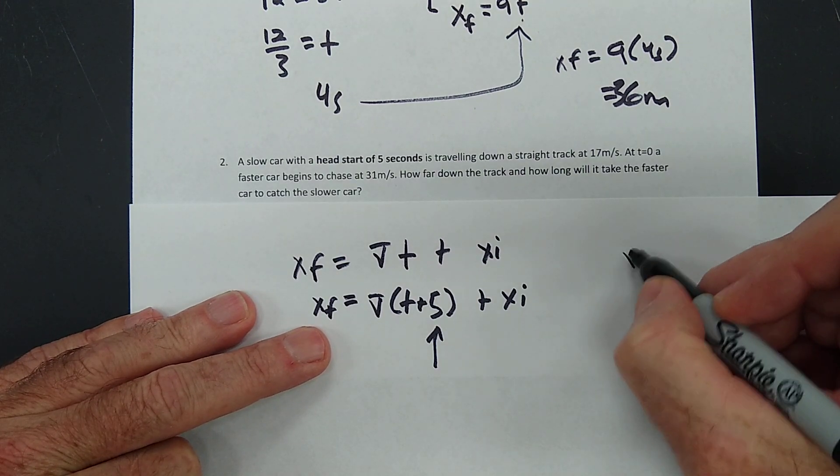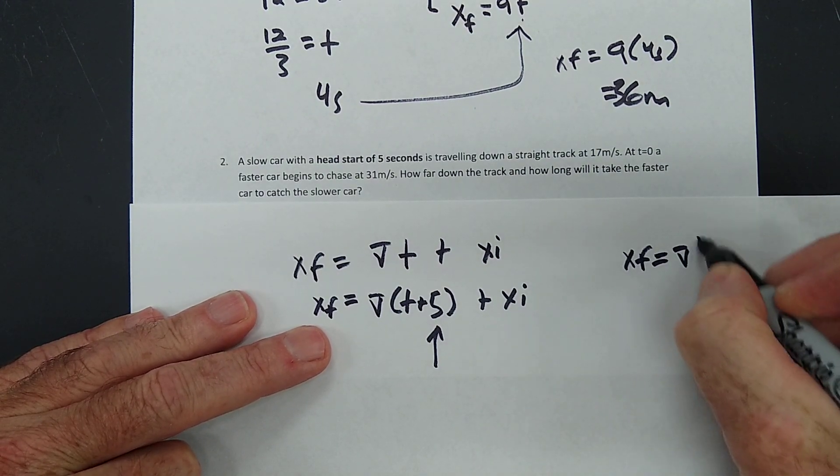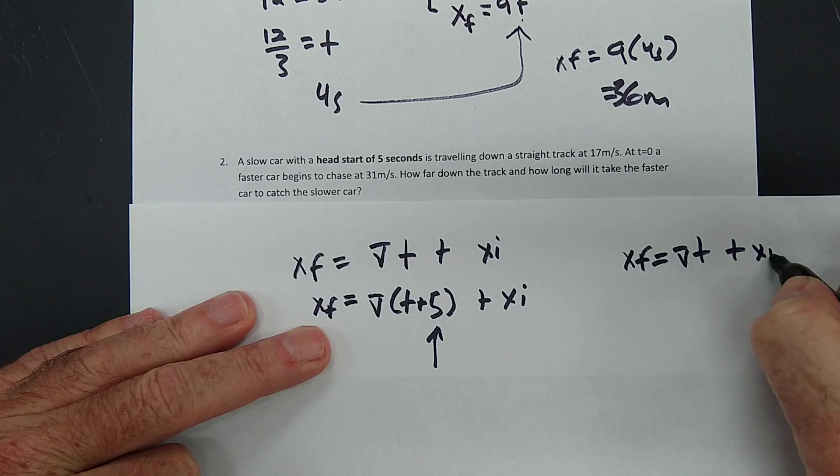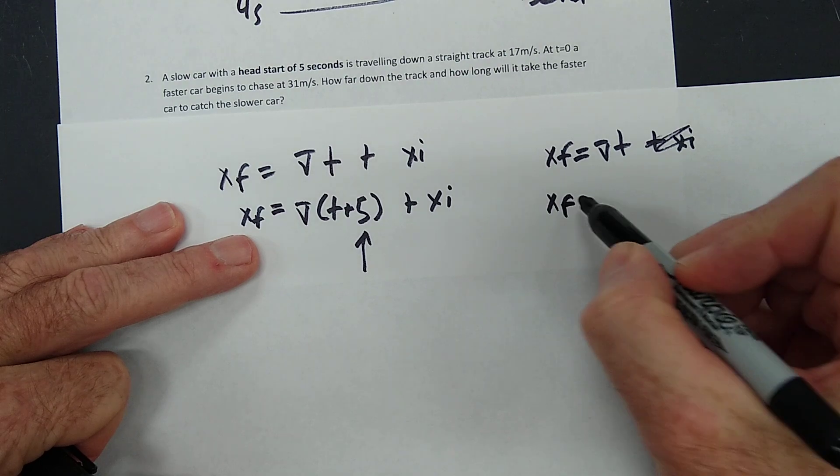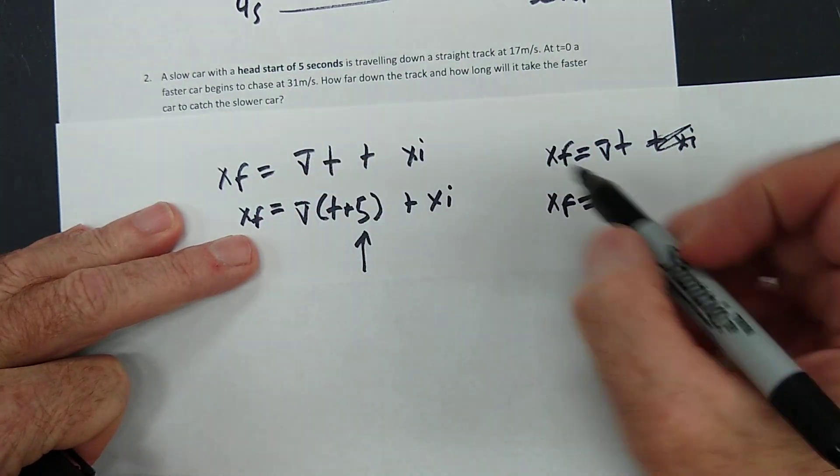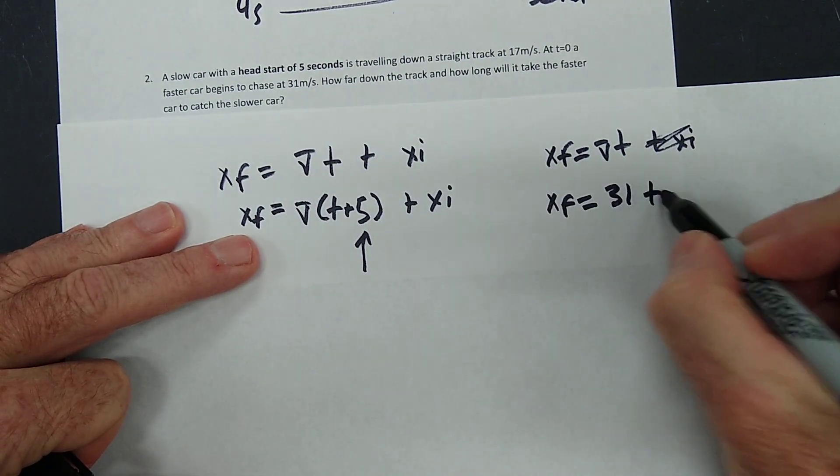The other car just starts at T equals 0 and goes 31 meters per second. So for it, XF is equal to VT plus XI. Well, none of this part's even in the equation. XF is equal to its velocity 31, 31 T.